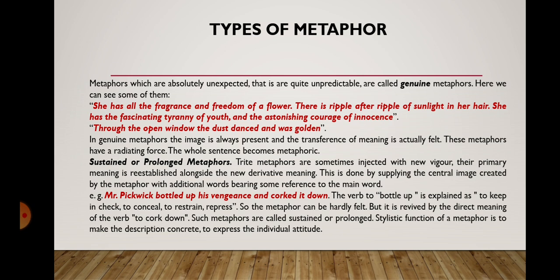The next type is sustained or prolonged metaphors. Trite metaphors are sometimes injected with new vigour — their primary meaning is re-established alongside the new derivative meaning. This is done by supplying the central image created by the metaphor with additional words bearing some reference to the main word. For instance, 'Mr. Pickwick bottled up his vengeance and corked it down.' The verb 'to bottle up' means to keep in check, to conceal, to restrain, to repress — so the metaphor can hardly be felt. But it is revived by the direct meaning of the verb 'to cork down.' Such metaphors are called sustained or prolonged. The stylistic function of a metaphor is to make the description concrete and to express the individual attitude.